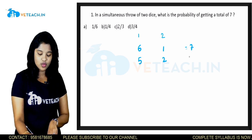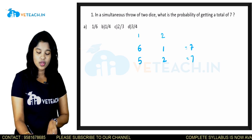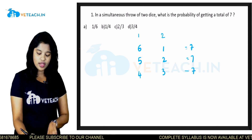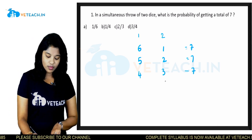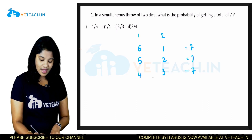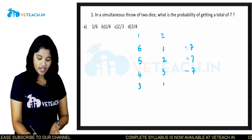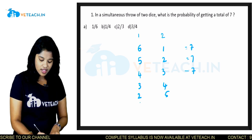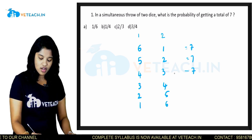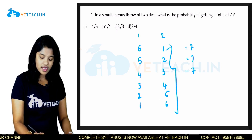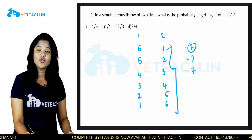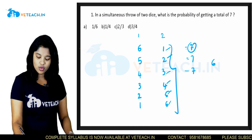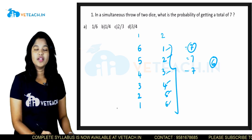If it is 5, this should be 2 — also equal to 7. If it is 4, it should be 3 — also equal to 7. Similarly, if it is 3, it should be 4; if it is 2, it should be 5; if it is 1, it should be 6. So the total number of favorable cases for the sum to be 7 are: (1,6), (2,5), (3,4), (4,3), (5,2), (6,1) — total 6 favorable cases.